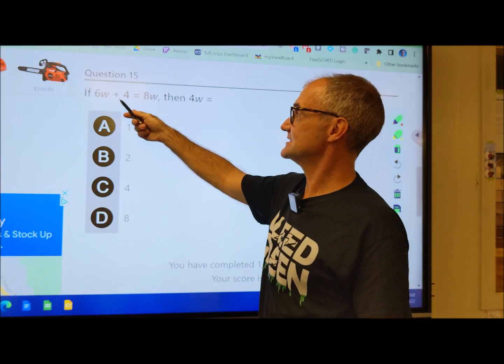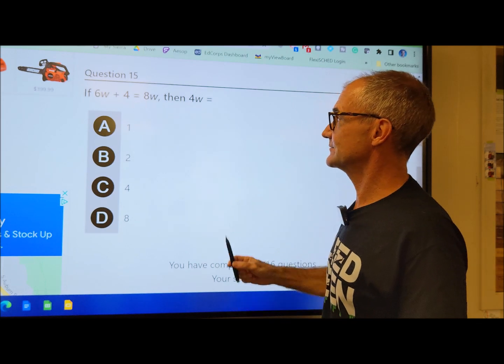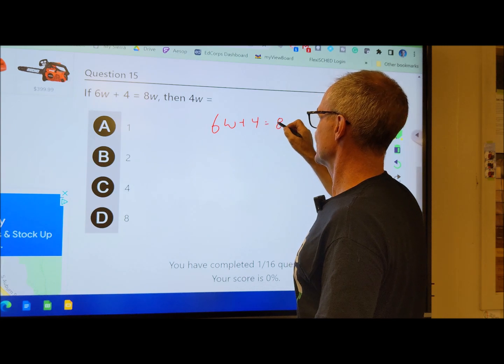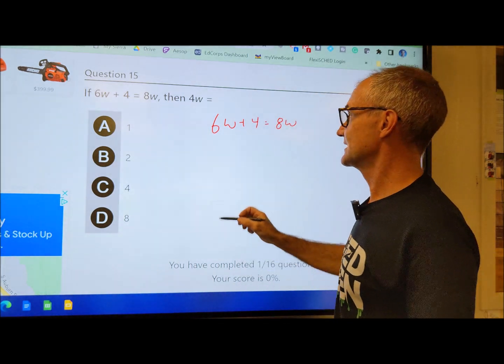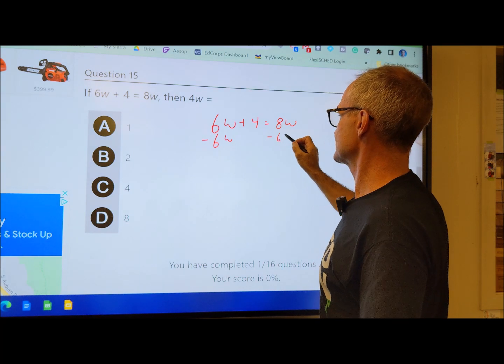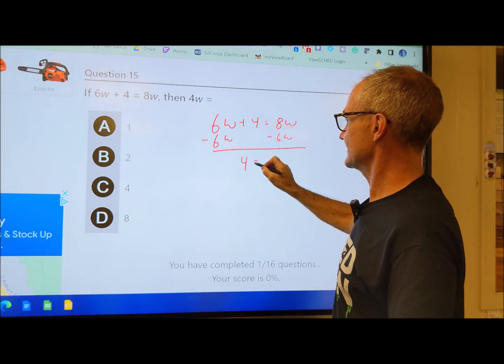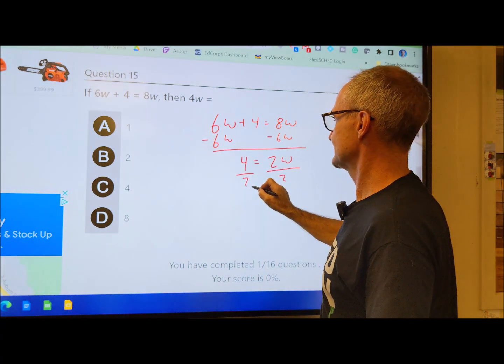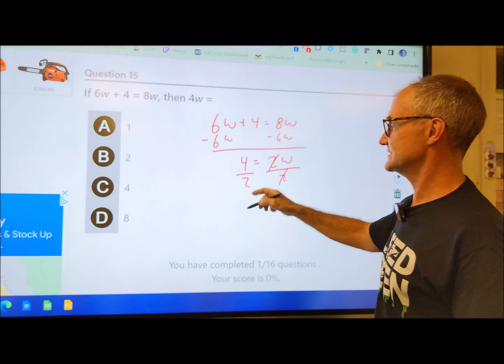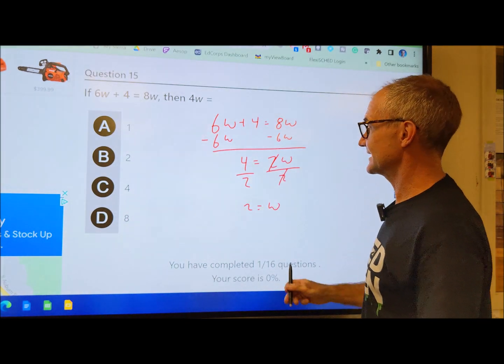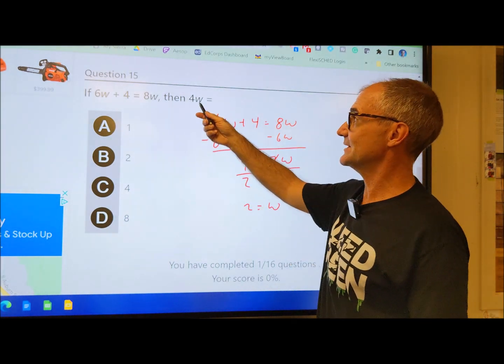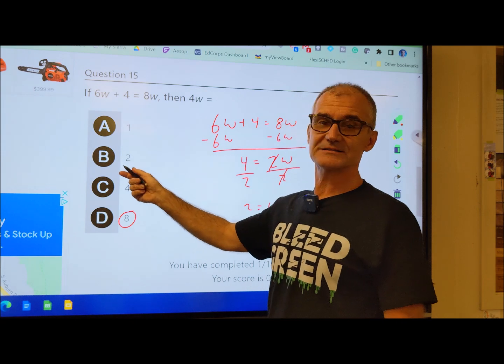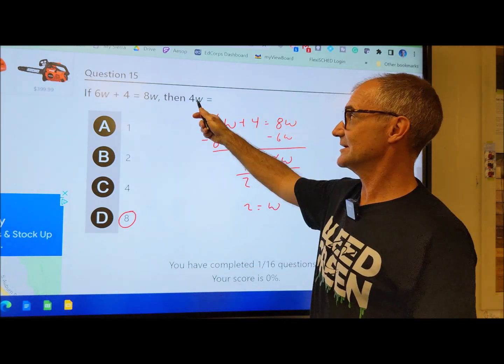Problem number 15, if 6W plus 4 equals 8W, then 4W equals. So if I have 6W plus 4 equals 8W, I solve for W first by subtracting 6W from both sides. That's going to give me that 4 by itself. 8W minus 6W is 2W. Divide both sides by 2, those will cancel, and W equals 2. I'm not done. I've got to take that value for 2 and plug it back in to find 4W. So my correct answer is 8 right here. Automatic distractor, but that's the wrong answer. You've got to plug it back in.